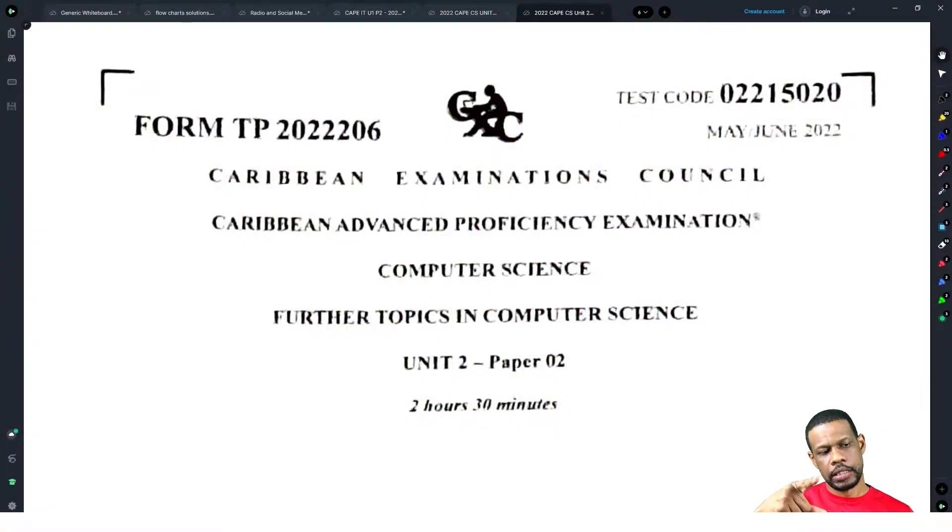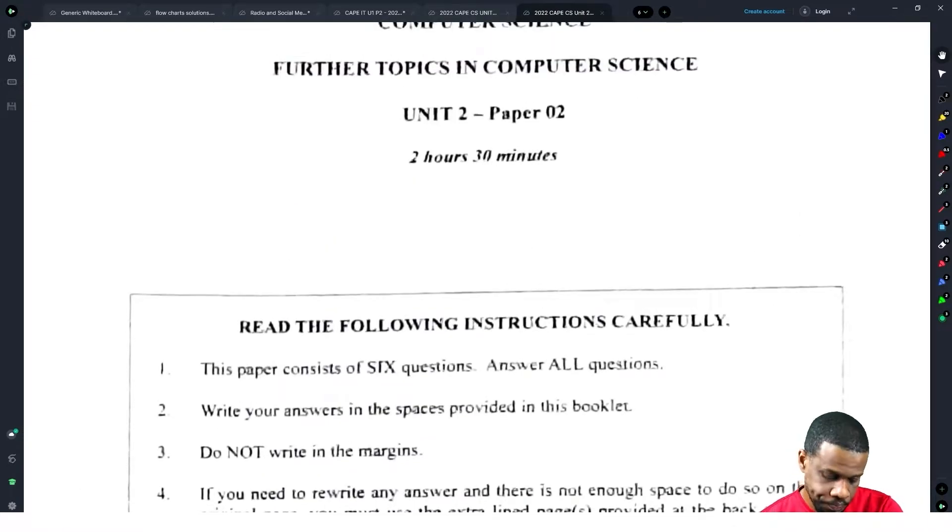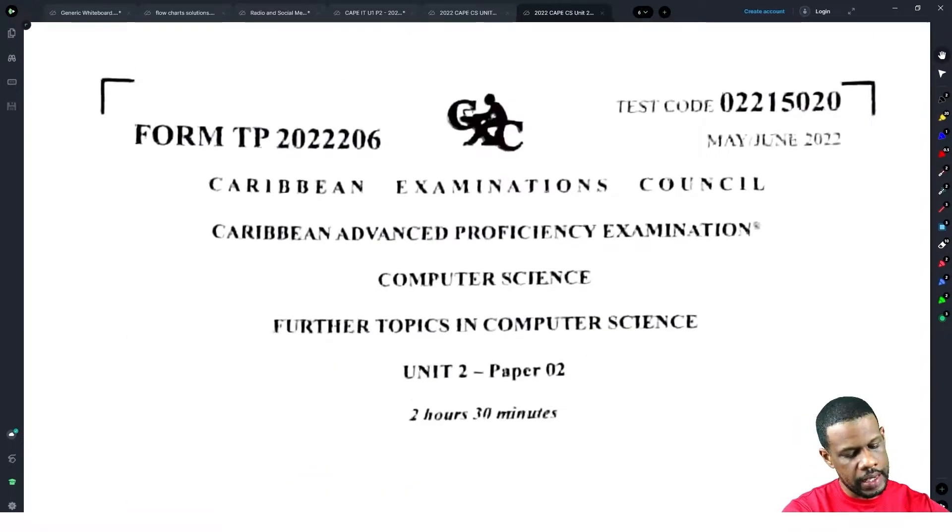All right, good evening, morning, whichever time it is, probably watching this three o'clock in the morning I don't know. For the folks that watch it after the fact, I am going to be working out the May-June 2022 Computer Science Unit 2. This exam took place on the 6th of June 2022.